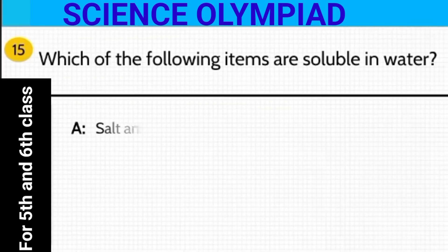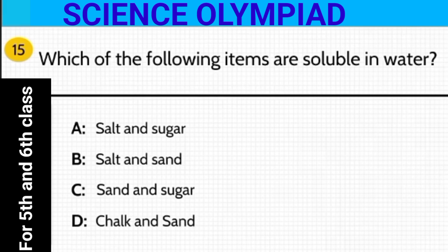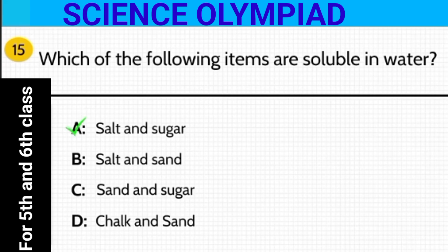Which of the following items are soluble in water? Out of these, which of them are soluble in water? Is it salt and sugar, salt and sand, sand and sugar, or chalk and sand?